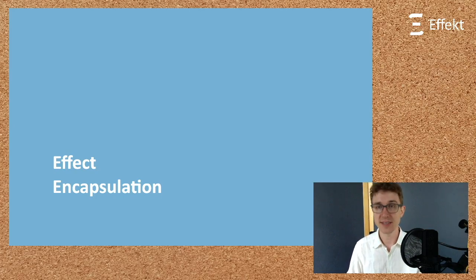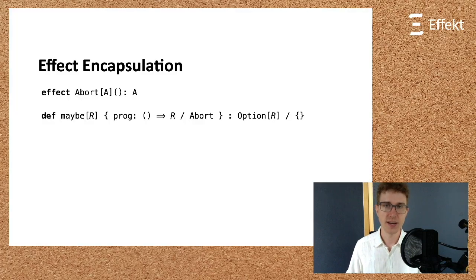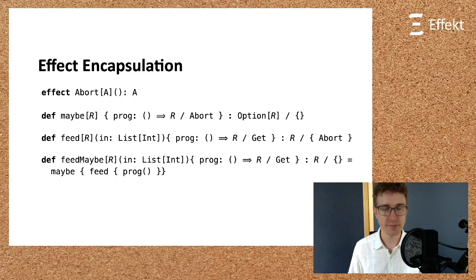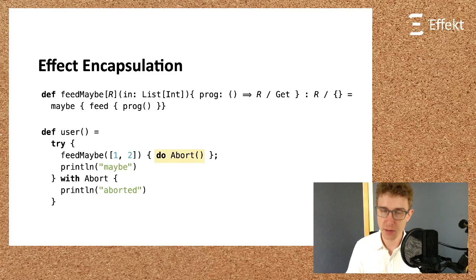Related to the topic of effect polymorphism is another important topic, effect encapsulation. To discuss effect encapsulation, let us assume another effect called abort. We also define a handler maybe that handles abort into an optional value. In the following, we adapt an example from the JFP paper Do Be Do Be Do by Convent et al. But first, we need some prerequisites. We define a handler feed that handles our get effect by reading values from a given list. In case there are no more elements, we use the abort effect. We can now compose the two handlers to obtain a new handler called feed_maybe that uses the maybe handler to handle the abort effect which is used by feed. In the function user we call feed_maybe with a block that performs the abort effect. But what is the expected result of running this example? There are multiple possible outcomes.